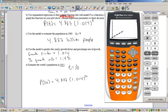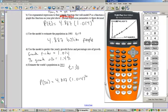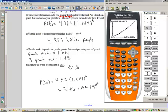And then we can hit trace again. So trace, make sure you're on the graph, not the plot, so hit up. Then hit 30, enter, and out pops my answer. And we'll round this to three decimal places. So this is approximately 7.416 billion people.